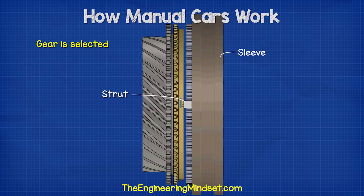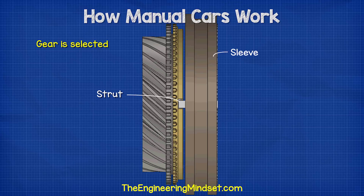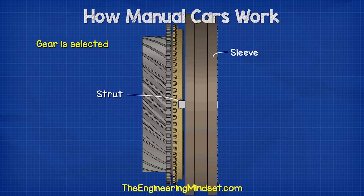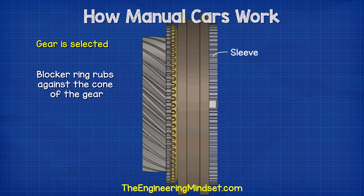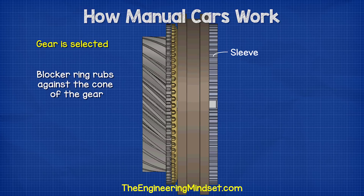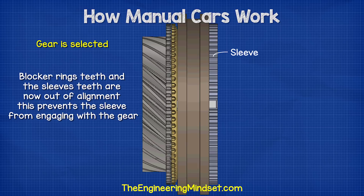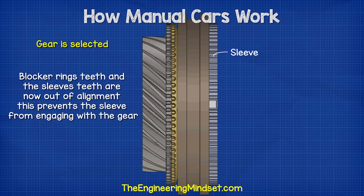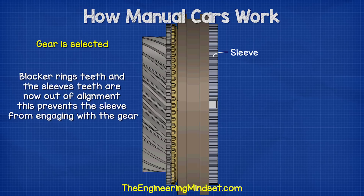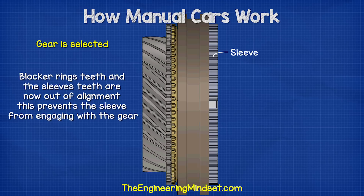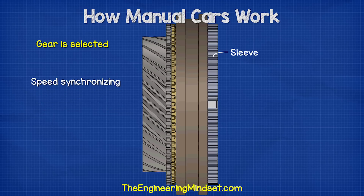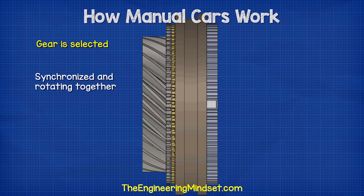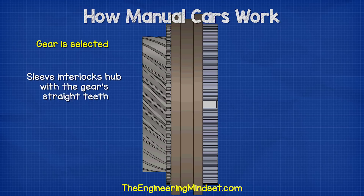When a gear is selected, the sleeve moves towards the gear. This pushes the strut against the blocker ring. The blocker ring rubs against the cone of the gear, causing the blocker ring to rotate until it hits the limit of the slot. The blocker ring's teeth and the sleeve teeth are now out of alignment. This prevents the sleeve from engaging with the gear. As the blocker ring continues to be pushed against the gear cone, the friction generated between the two causes them to synchronize speed and rotate together. The sleeve is then pushed across, moving the blocker ring and allowing the teeth on the sleeve to engage with the straight teeth of the gear.